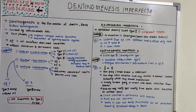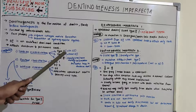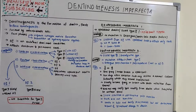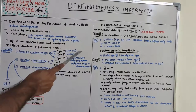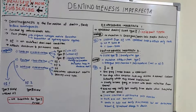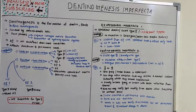Shields classified dentinogenesis imperfecta into three types. Type 1 is dentinogenesis imperfecta with osteogenesis imperfecta (OI). Type 2 is dentinogenesis imperfecta without osteogenesis imperfecta. Type 3 is the Brandywine type, a rare form with multiple pulp exposures and periapical lesions in deciduous teeth.